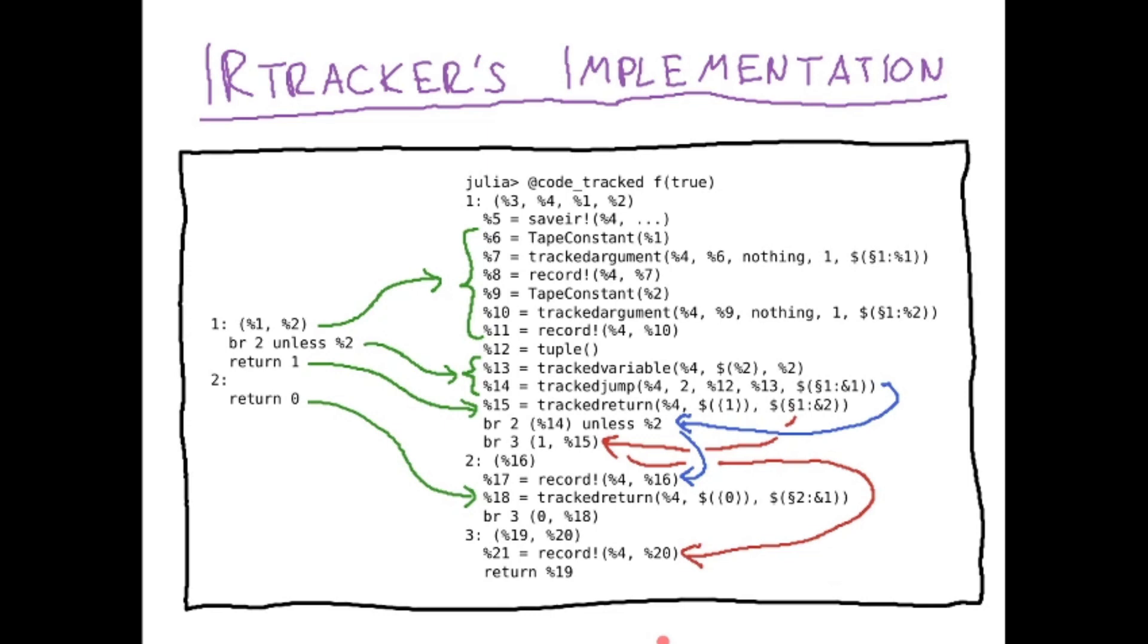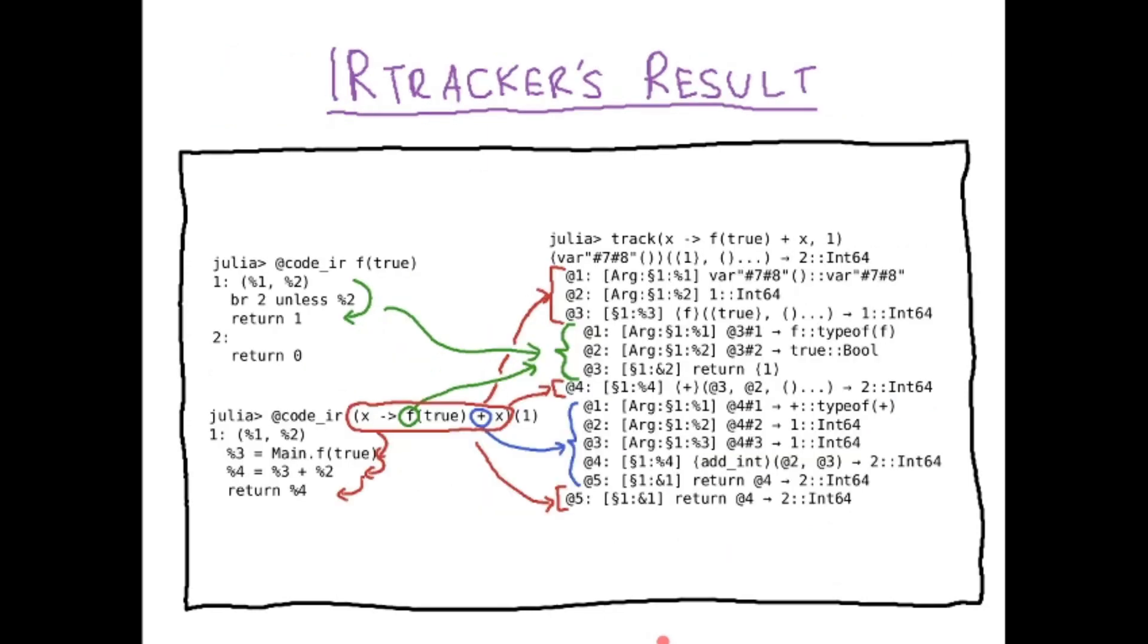how you have to insert those tracking statements for branches. And this is what comes out if you use this tracking transformation. So on the left are shown the intermediate representations of two functions, and on the right is the track of the outer function. You see on the outer level the track of the function itself, and on the inner level the recursive tracks, but only those parts that were actually executed during this particular execution.